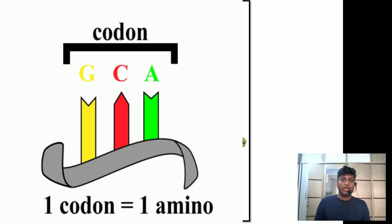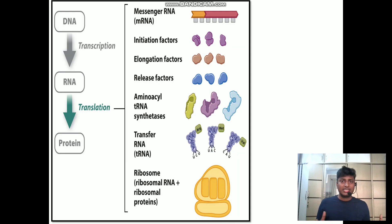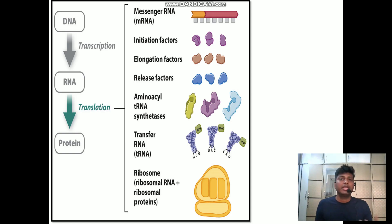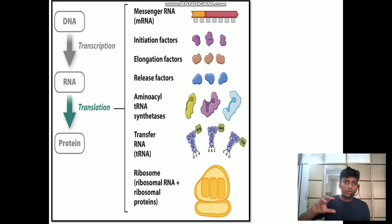There are certain factors which are also important for translation. Factors are nothing but small proteins. There are three types: initiation factors, elongation factors, and termination factors. Initiation factors are proteins inside the cell that help start the process of translation. Elongation factors help in the formation of the polypeptide chain, which is going to be formed on the ribosome.